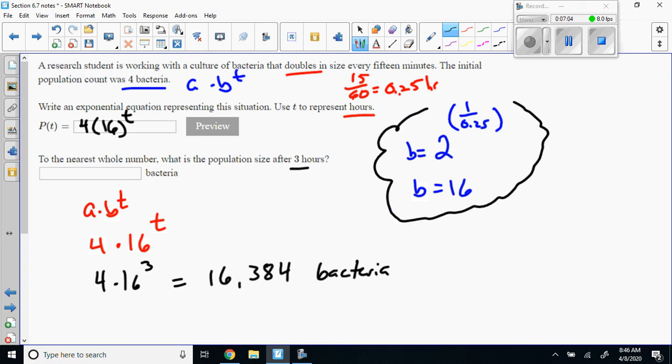When you evaluate that you come out with 16,384 bacteria. This little technique here is a way to get a base without having to rewrite it and do a bunch of stuff.